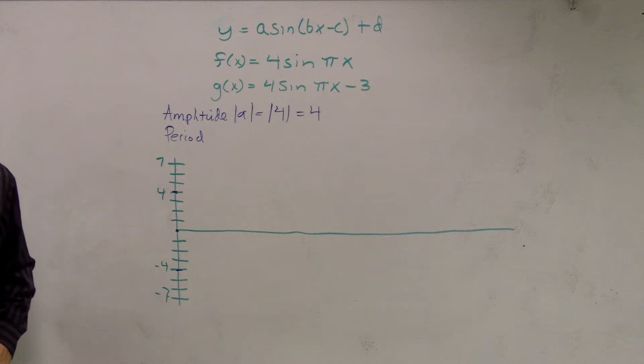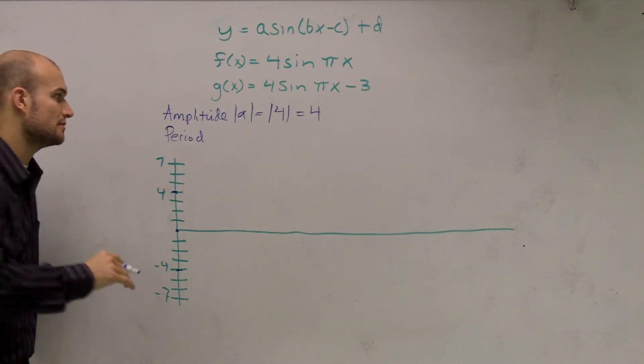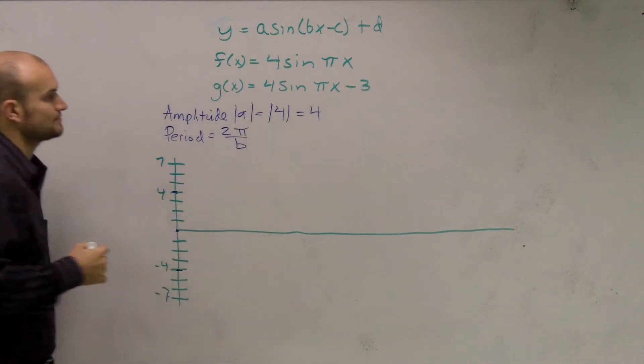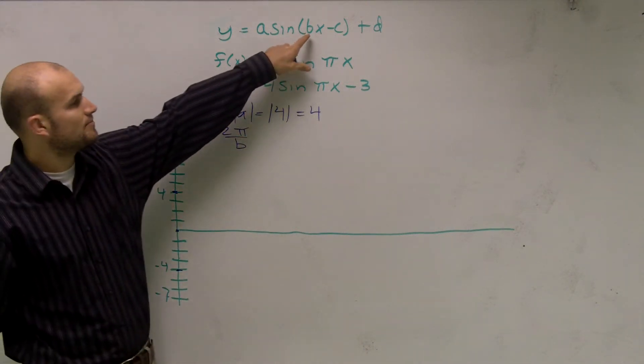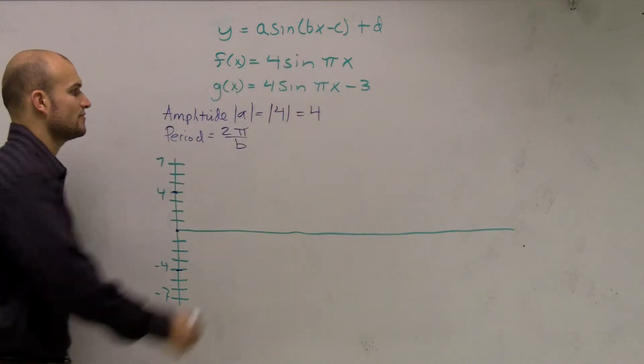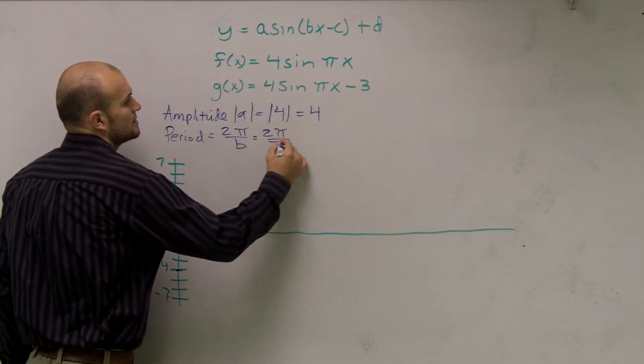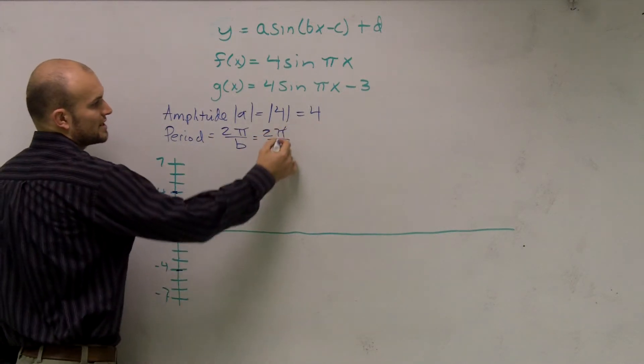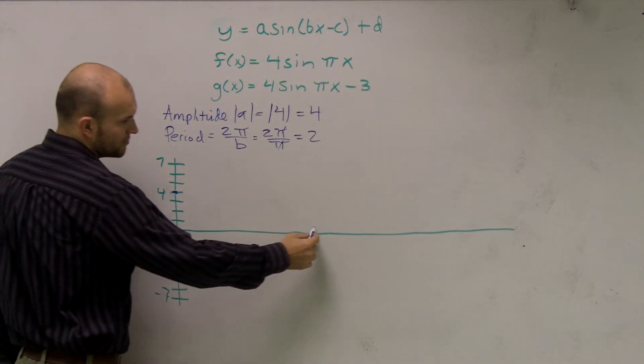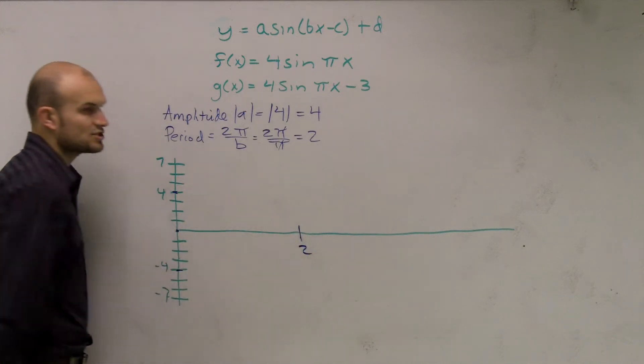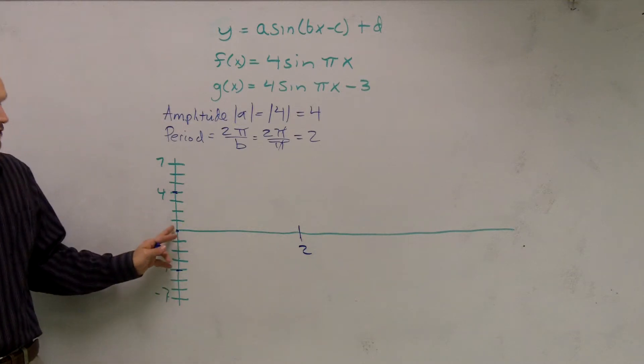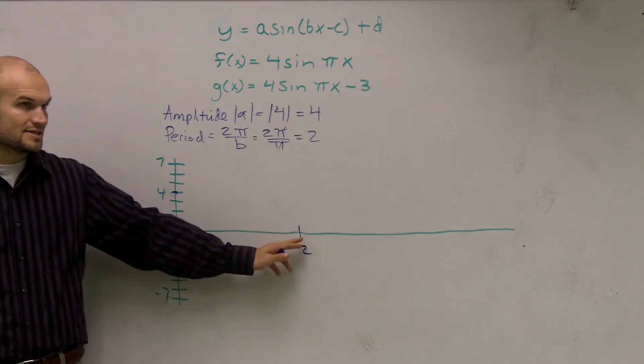Now if you remember, a period is how long it takes your graph to complete one whole cycle. So there's a formula for period, which is 2π divided by b. So we need to figure out b, which is your number that's in front of your x of your function. So I look in here and I say, well, π is my number in front. So I write 2π divided by π. Those cancel out, equals two. So what I'm going to do is I'm going to go out to here and say that point is two. So my graph is going to complete a whole cycle at two.